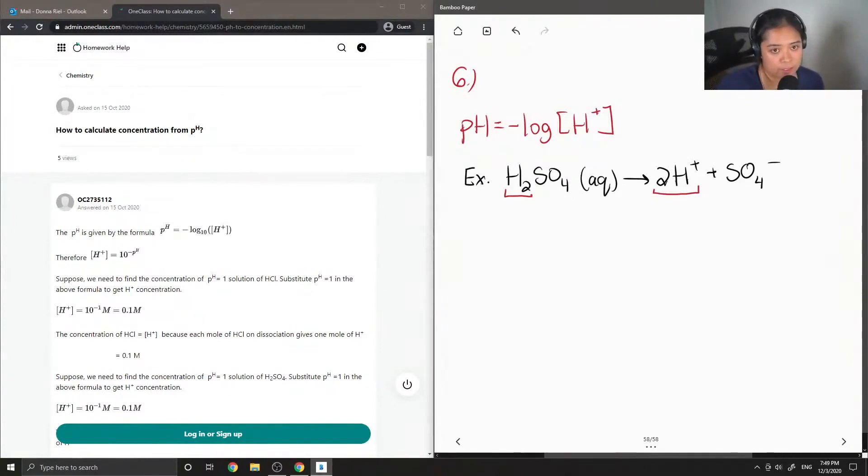So, let's say the solution was given to us. So, if the solution of H2SO4 has a pH of, let's say, 1.